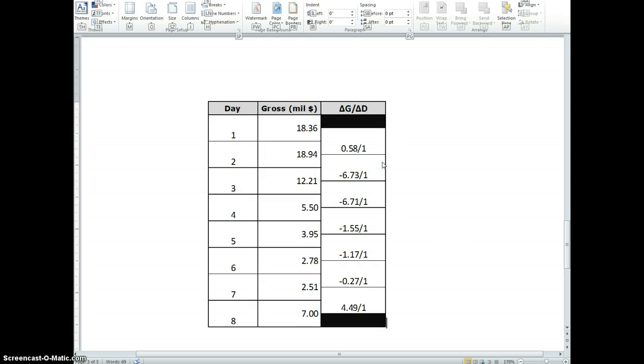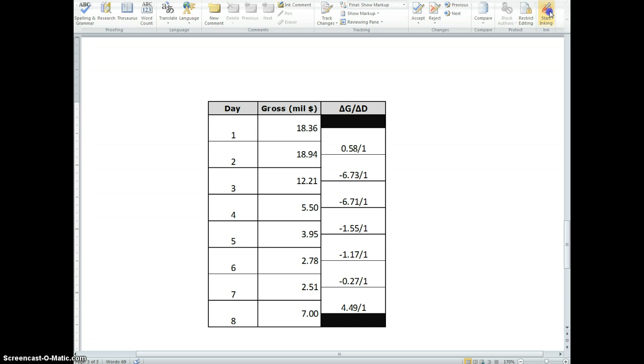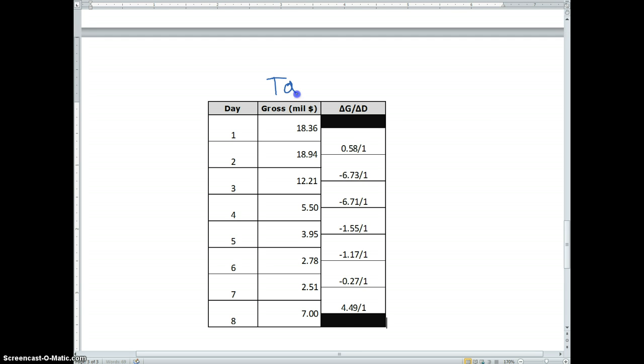Next, let's take a look at a movie, the earnings for a movie. These are the gross revenues, and this was for a movie called Taken 2. Since the day it came out, here are the gross revenues in millions of dollars earned from all the movie theaters. So, day one, the movie made $18.36 million. Day two, it made $18.94 million.